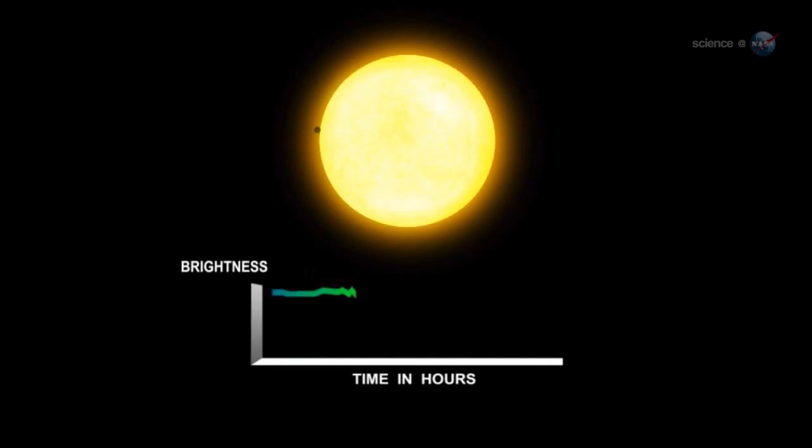Kepler works by looking for the slight dimming of starlight caused when a distant planet transits its parent star. Any dip in stellar brightness attracts the attention of the Kepler team and can prompt them to declare a planet candidate.